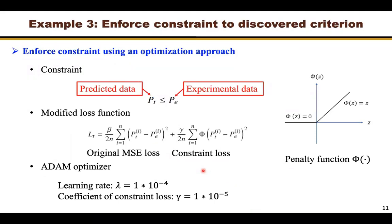The previous two examples show the feasibility of applying sparse regression to discover failure criteria. However, the identified results lie in the middle of the data, while in the design of composite structures we typically want conservative design — the model predicted results should be smaller than the experimental data. We can satisfy this need with sparse regression from an optimization approach. We set constraints that enforce the predicted data to be smaller than experimental data. In implementation, we use a penalty function that shifts negative errors to zero, and add this loss to the original mean square error loss to form a modified loss function, which is fit into an optimizer. We use the Adam optimizer with learning rate 10^-4 and coefficient of constraint loss 10^-5.